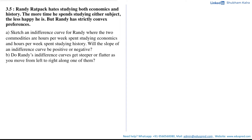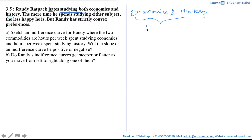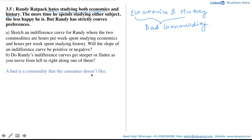Before discussing the solution, let's first understand what information we have. The question says Randy hates studying both economics and history, which means for Randy, economics and history are bad commodities. By definition, a bad is a commodity that the consumer doesn't like. The next thing we have is that Randy has strictly convex preferences.